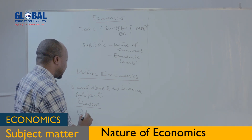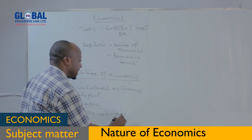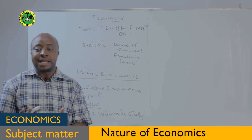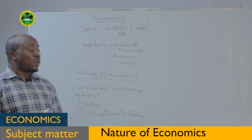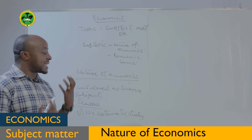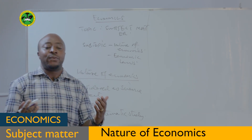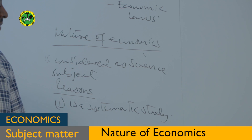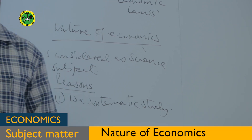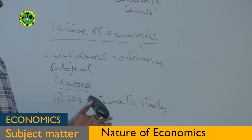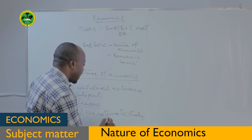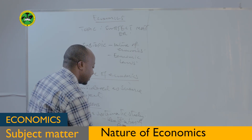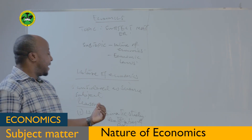The first reason they give is that economics is a systematic study. A science is a body of knowledge which is systematically studied and analyzed. All science disciplines involve certain steps: if it is a science subject, it should involve identifying different problems in the procedures of making solutions.